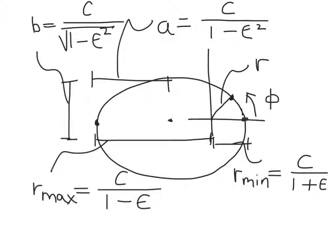And we'll walk through it here. But this relationship between r and the angle phi actually describes an elliptical orbit when epsilon is less than 1.